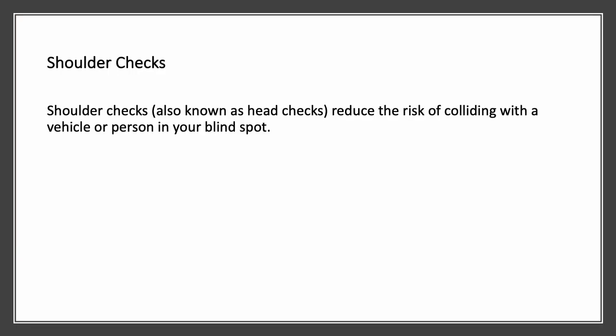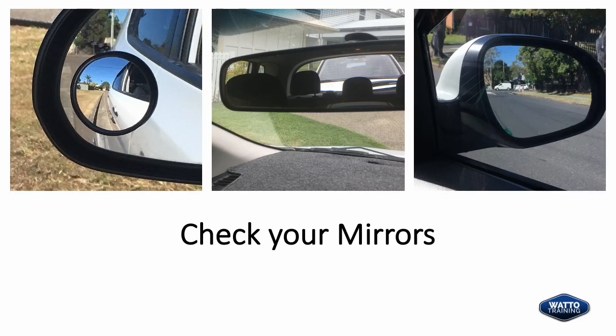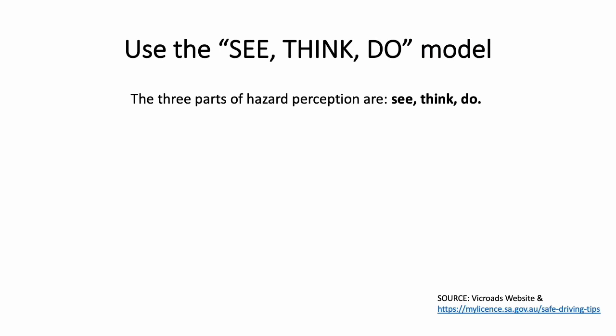Shoulder checks, also known as head checks, reduce the risk of colliding with a vehicle or person in your blind spot. Check your mirrors as well. Use the See, Think, Do model. The three parts of hazard perception are See, Think, and Do.